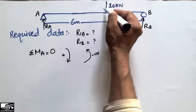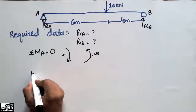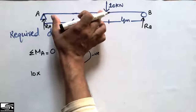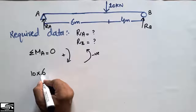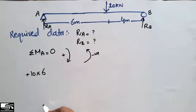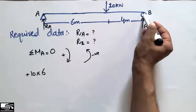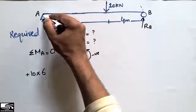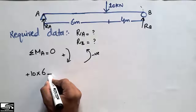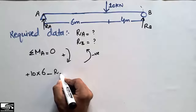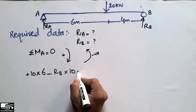The first moment is due to the 10 kN load, which acts clockwise around point A. So we write: 10 kN multiplied by its moment arm of 6 meters — this is positive since it is clockwise. The second moment is due to RB, which acts anti-clockwise around point A, so we write it with a negative sign: minus RB multiplied by its moment arm of 10 meters. The summation of moments equals zero.